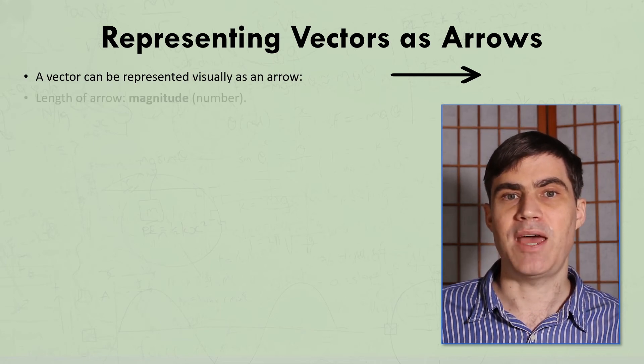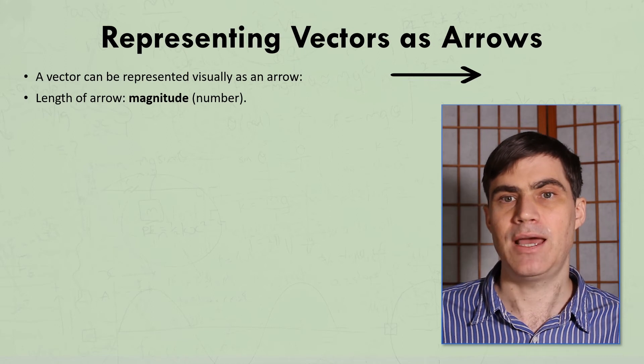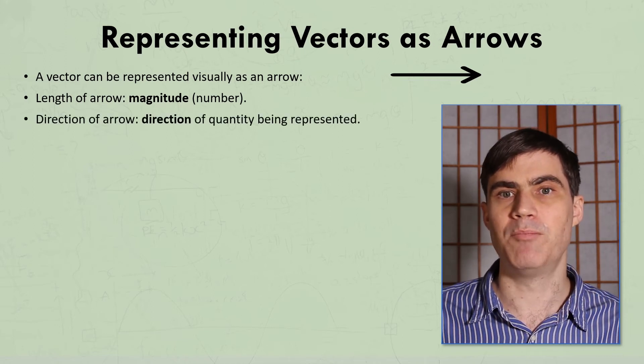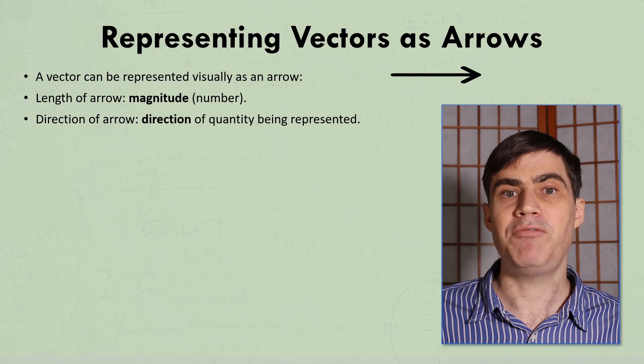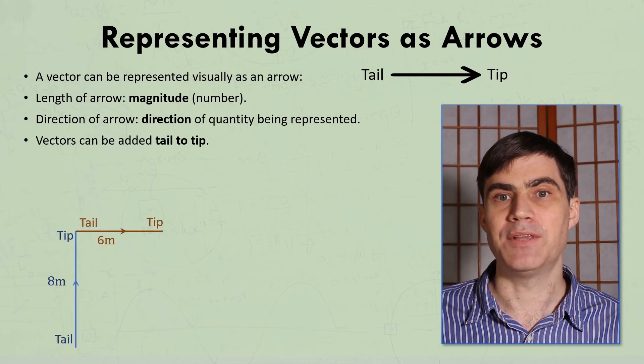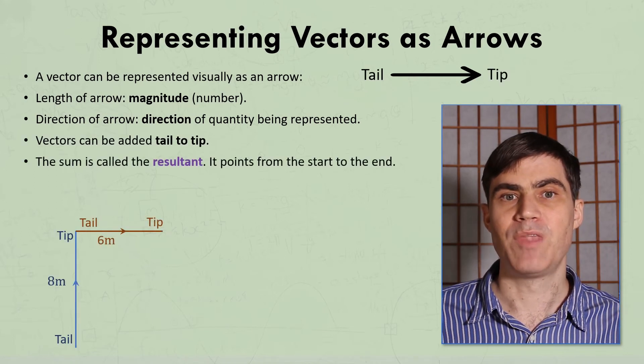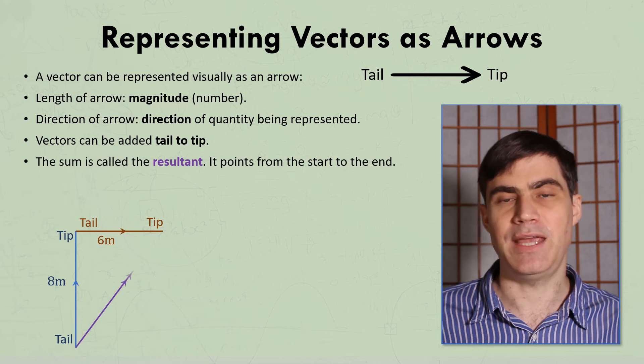Logically, the length of the arrow represents the magnitude of the vector, and the direction of the arrow represents the direction of the quantity being modeled. We can then add the vectors tail to tip, and the sum, called the resultant, points from the start of the first arrow to the end of the last arrow.